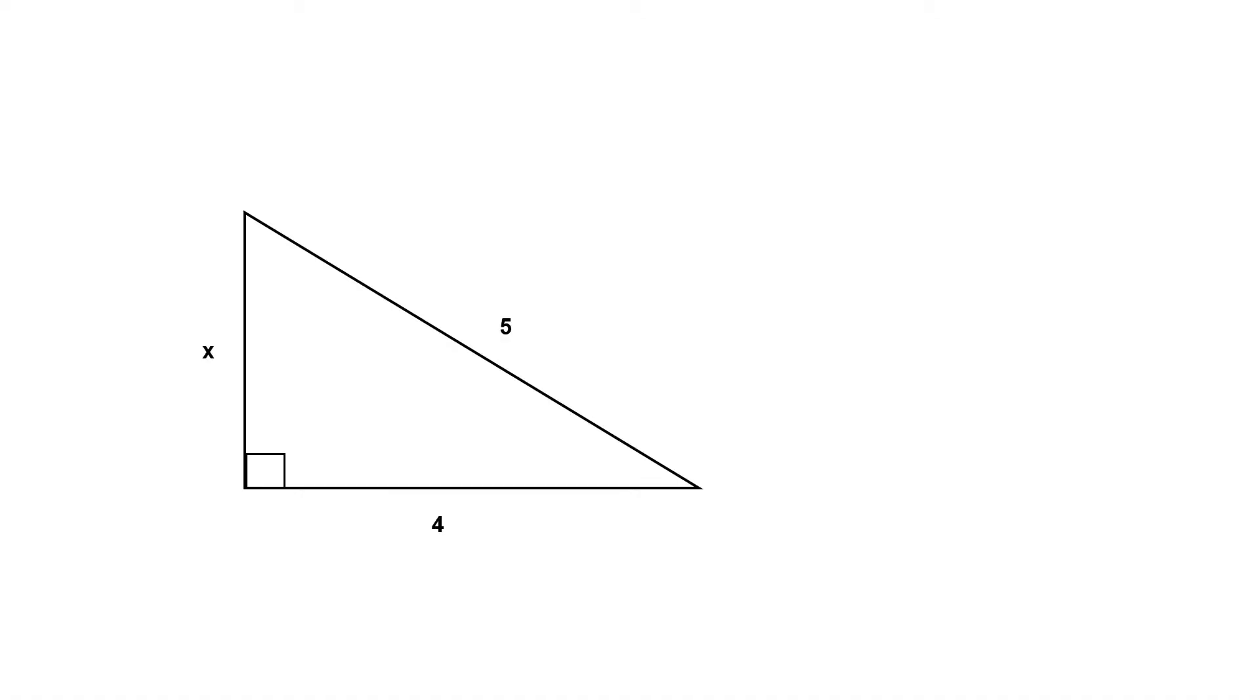So let's try this as a worked example. As we can see here, we're given a value for the hypotenuse which is five, a known side length which is four, and then an unknown side length which is x.